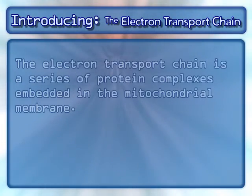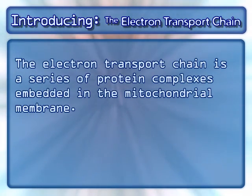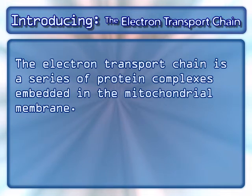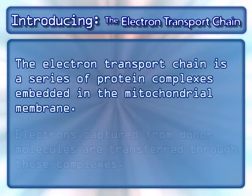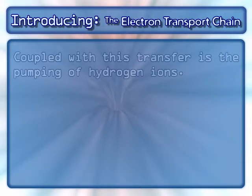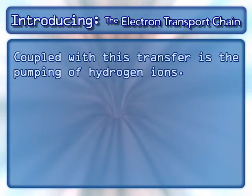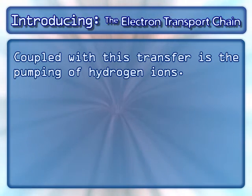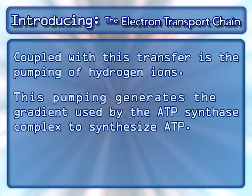The electron transport chain is a series of protein complexes embedded in the mitochondrial membrane. Electrons captured from donor molecules are transferred through these complexes. Coupled with this transfer is the pumping of hydrogen ions, which generates the gradient used by the ATP synthase complex to synthesize ATP.